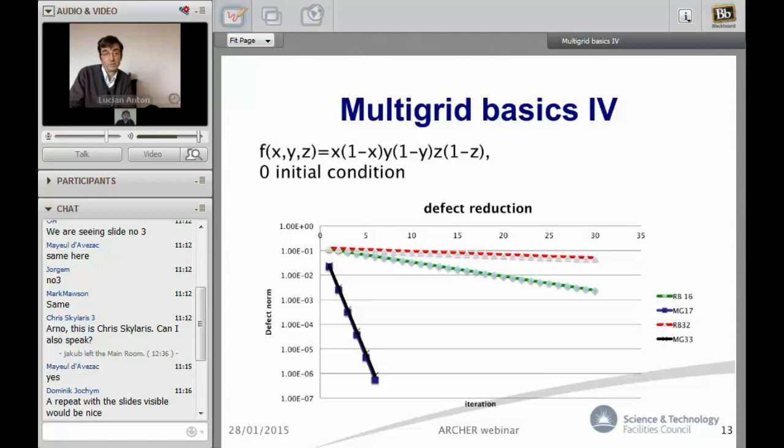Also, you can see you get one order of magnitude reduction per iteration. So basically in six steps we are below 10 to minus 6. It makes a difference. It's quite a complex technology so to speak, but it's rewarding if it's implemented correctly.